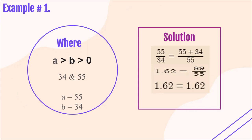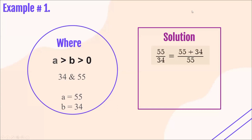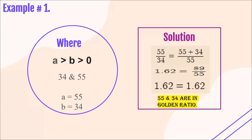So, can we say that our given numbers are in Golden Ratio or not? Yes — 55 and 34 are in Golden Ratio because both sides of the equation are equal to each other. Let's try another example.